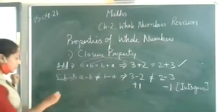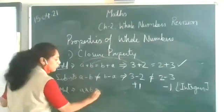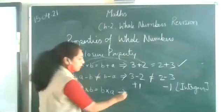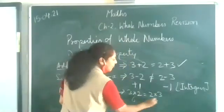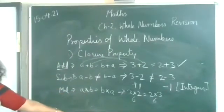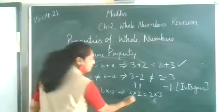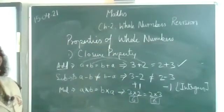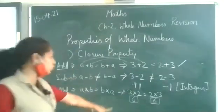Under closure property let's see multiplication. If A into B equals B into A — three into two equals two into three — you will say yes, it gives the same result. Both equal six, which is a whole number. You are getting the same result when you reverse the order of the numbers. So this property holds under multiplication. Give me the thumbs up if you understood this.